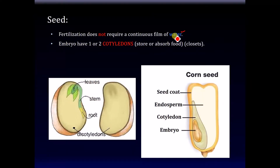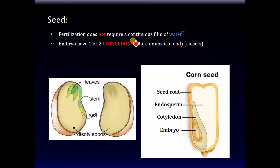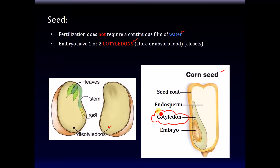Seeds can be divided into two categories: those that have one or two cotyledons. This diagram shows two cotyledons, and the corn seed has one big cotyledon, as you can see.